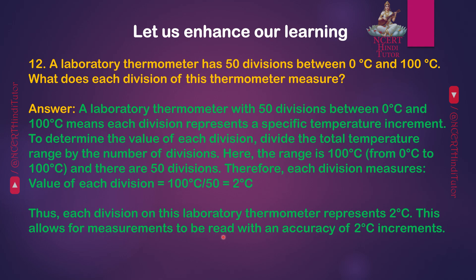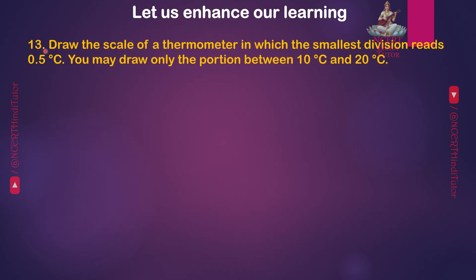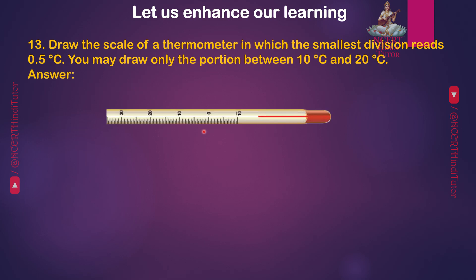This allows for measurements to be read with an accuracy of 2 degrees Celsius increments. Question 13: Draw the scale of a thermometer in which the smallest division reads 0.5 degrees Celsius. Draw only the portion between 10 degrees Celsius and 20 degrees Celsius. Friends, this is the thermometer with smallest divisions reading 0.5 degrees Celsius — you can draw this figure accordingly.